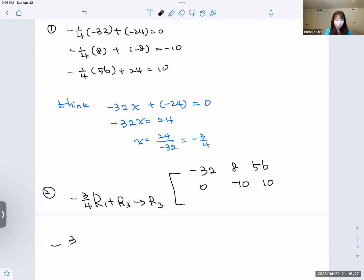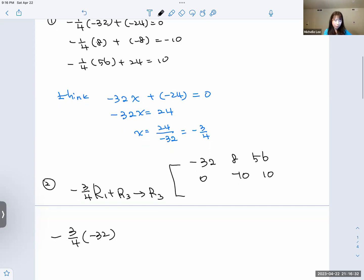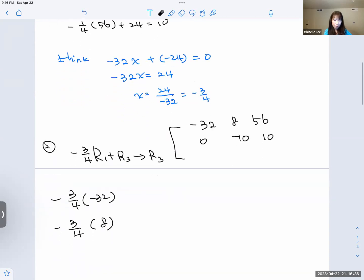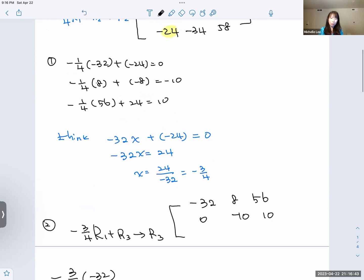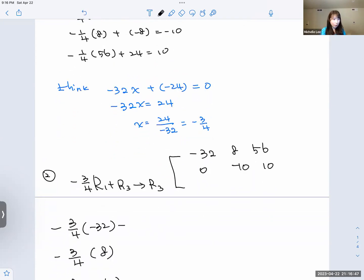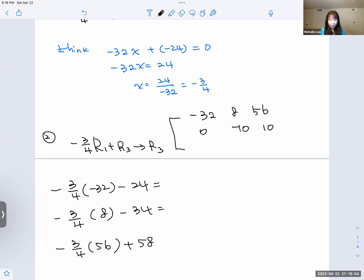We have negative 3/4, negative 32, and the second one has 8, negative 3/4. Third one is 56, and then negative 24, negative 34, 58. So negative 24, negative 34, and positive 58. So we have this one, 0. We have a second one equal to negative 40. We have a third one is 16. So we have a 0, negative 40, 16.